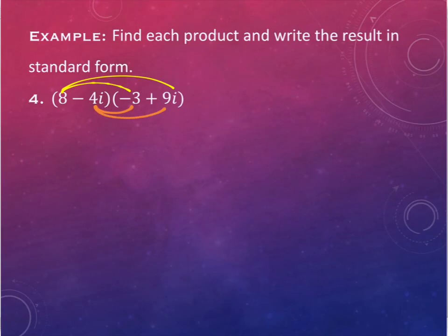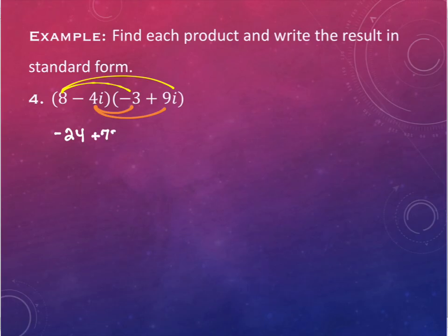It doesn't have to be in this order — do whatever order you like, but you need all four components. So if I take 8 times negative 3, what am I going to get? Negative 24. And if I take 8 times 9i, what am I going to get? That is 72i. Those are the yellow pieces on top.